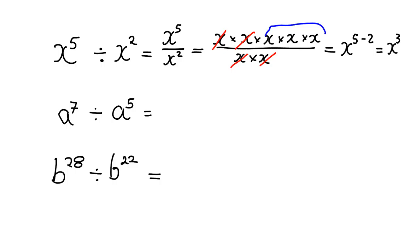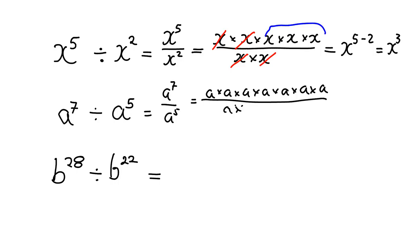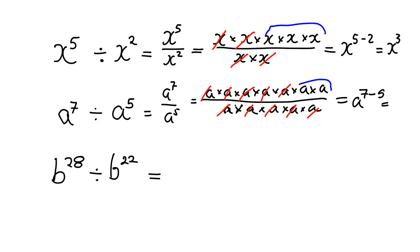Let's do one more example to make sure we've all got that. If we've got a to the 7 over a to the 5, what we're taking is a multiplied together seven times at the top, and at the bottom a to the 5, which is just a multiplied together five times. Those five a's at the bottom are going to cancel with five of the a's from the top. You started with seven a's and cancelled five, so what you're left with is just two a's multiplied together, which is a squared.